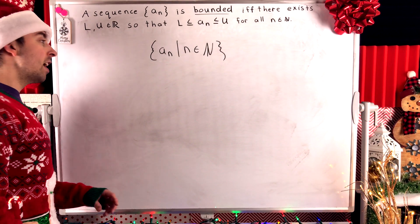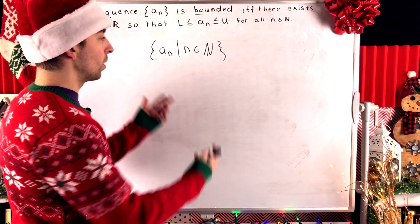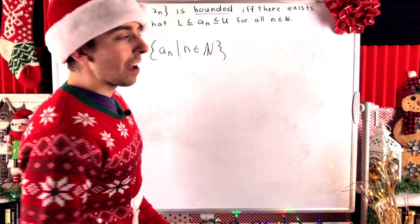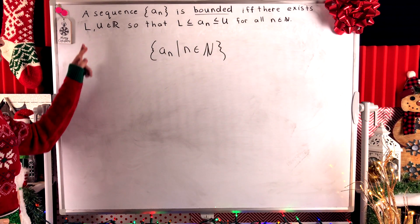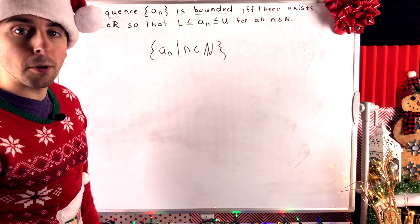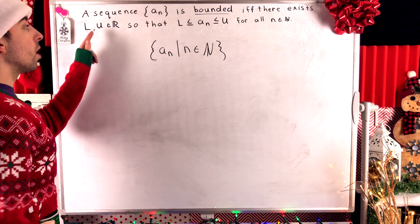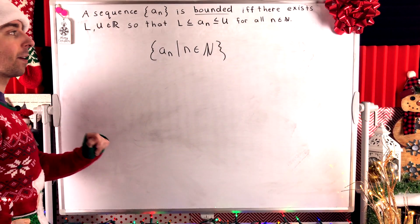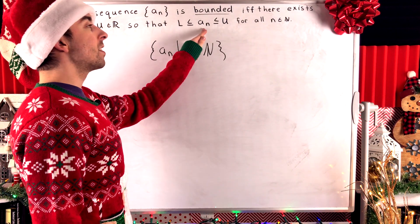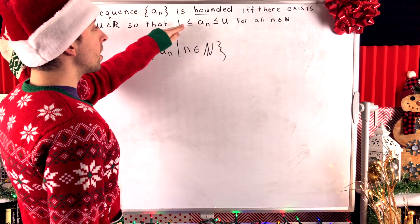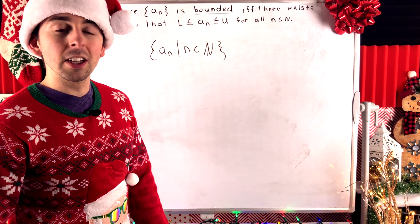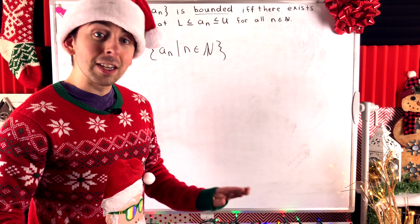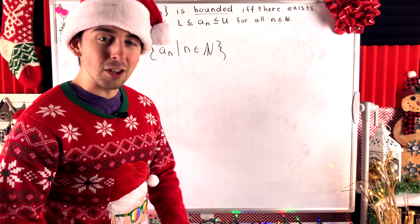A very nice equivalent way to state that, without writing out sets, is that a sequence is bounded if and only if there exist two real numbers: l, a lower bound, and u, an upper bound. These are single lower and upper bounds that don't depend on the term of the sequence, so that every term is greater than or equal to l but less than or equal to u. The lower and upper bounds are not unique and not even necessarily distinct, though they usually will be.